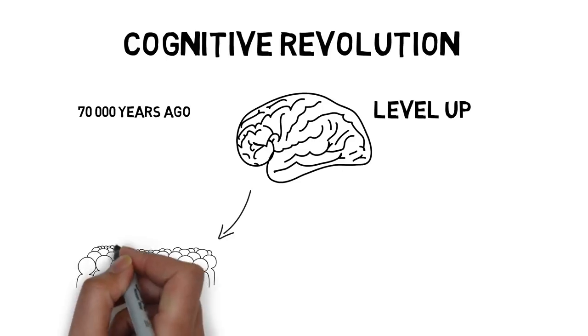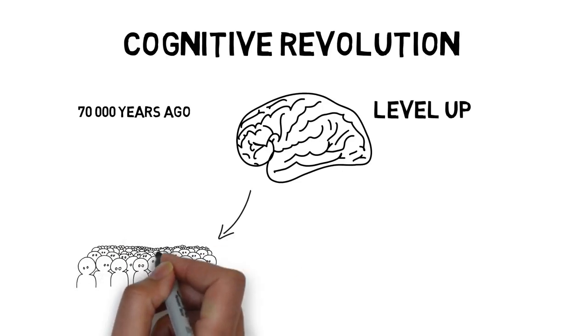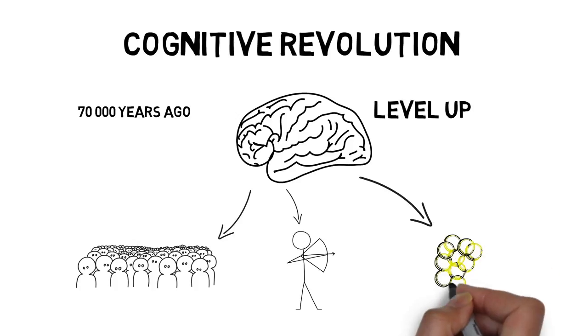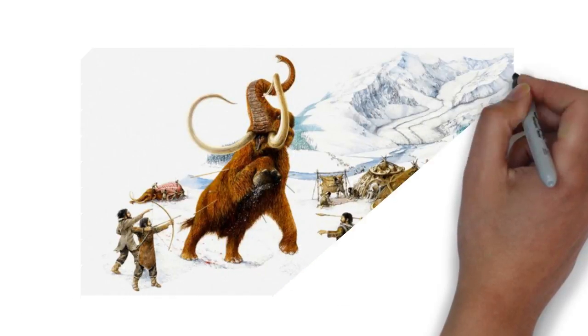This development gave them pretty instant improvement in brainpower. With their improved brain capabilities, Homo sapiens were able to outperform their rivals. They began to form larger, more sophisticated communities. They invented more complex forms of hunting tools and they even began to establish trade networks.